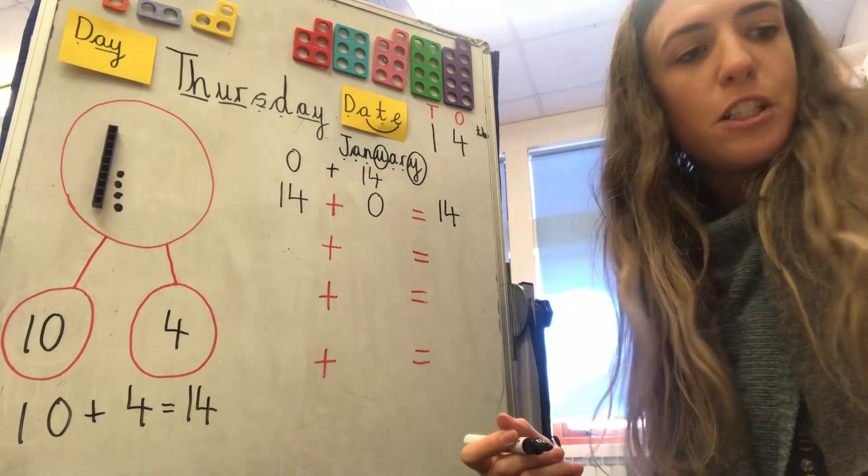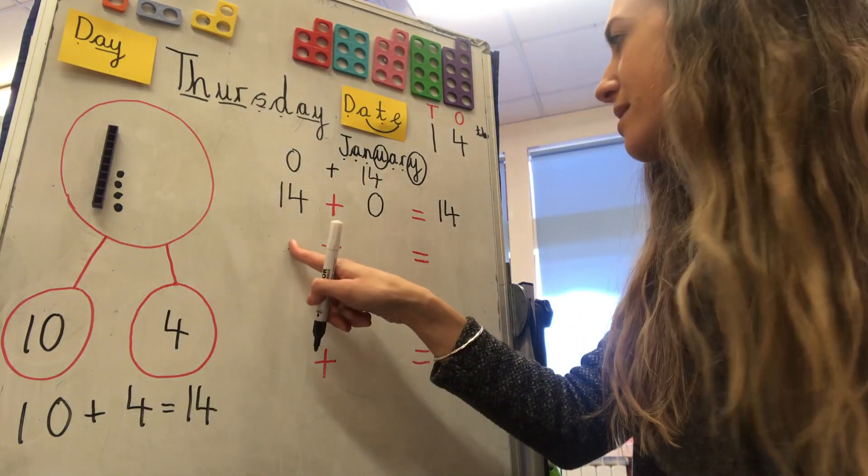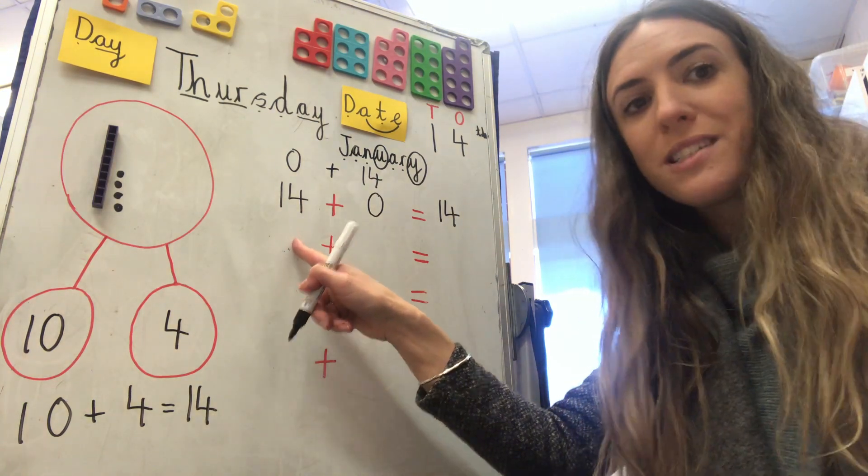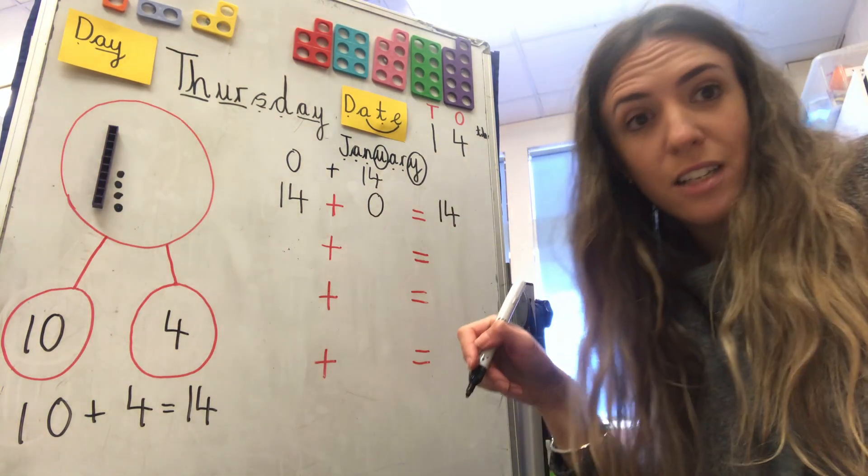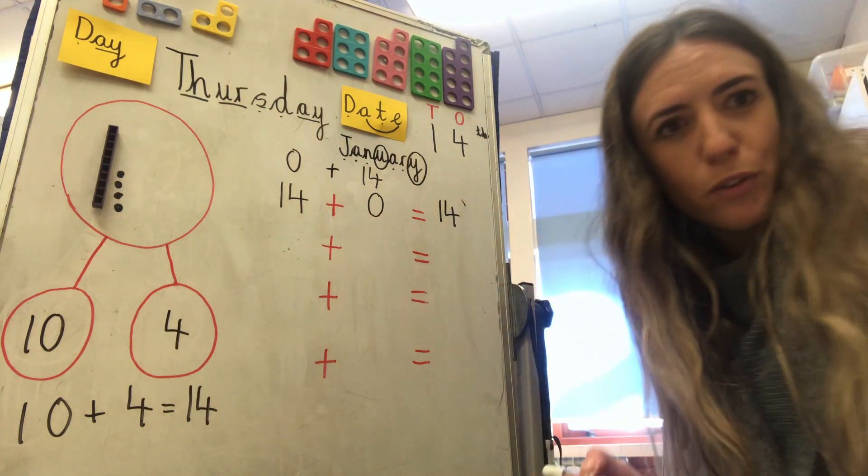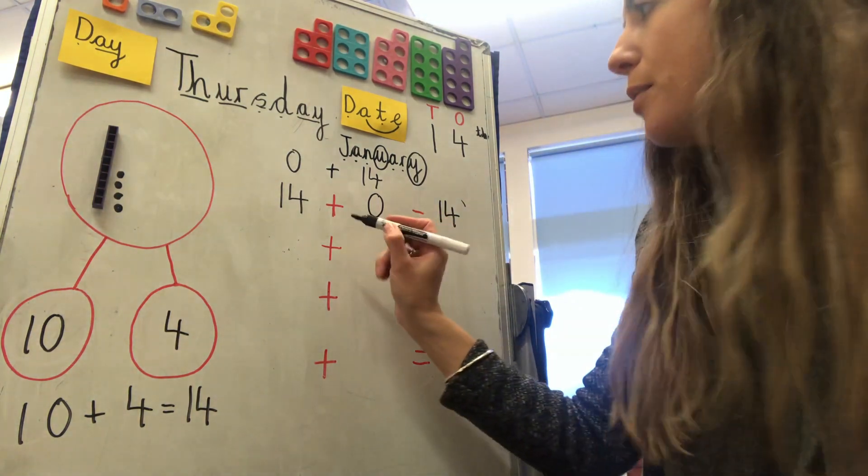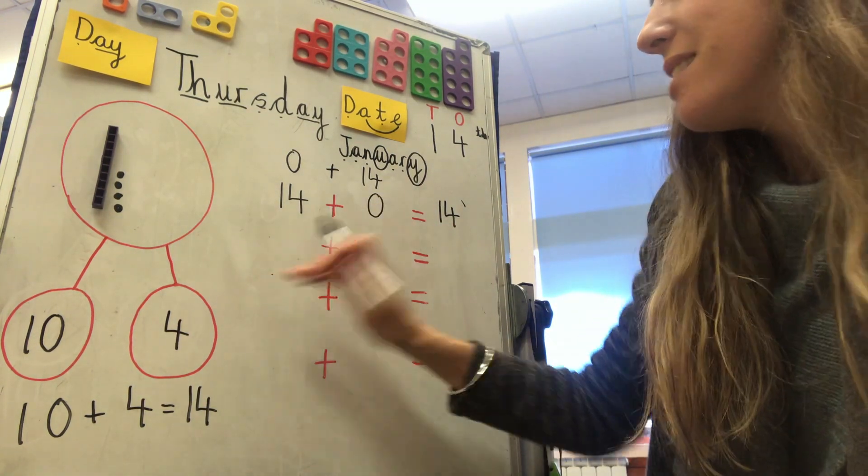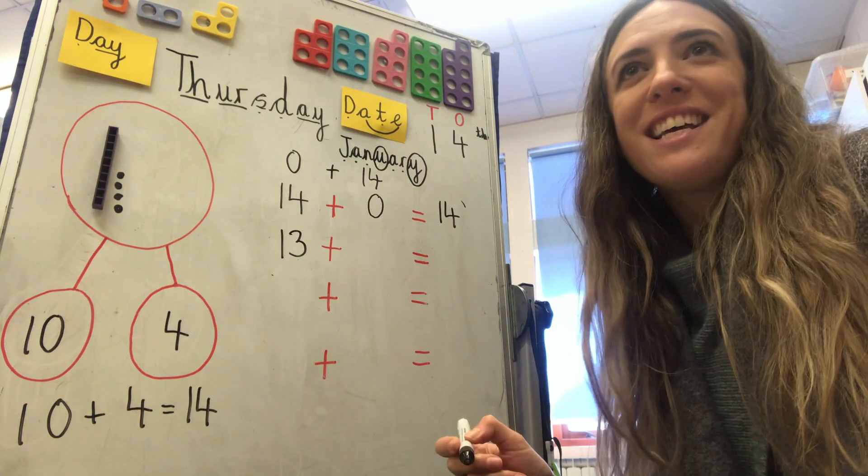Okay, how else could I do it? Could I start here with fifteen? No, because that's more than fourteen. And our problem is to make fourteen altogether. So, it needs to be a number that's less. So, I'm going to go with thirteen.